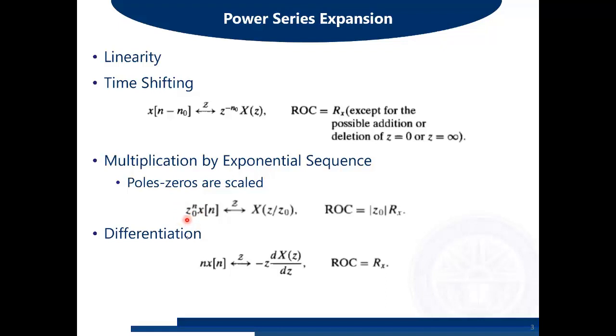We will see the effects of both when z₀ equals a real number and when z₀ is a complex number. But the common perspective is that if you multiply X(n) with z₀ raised to power n, the Z-transform will be scaled by z₀.